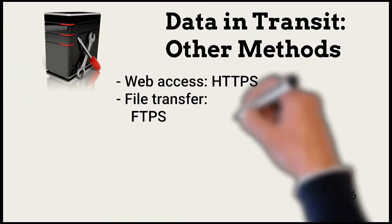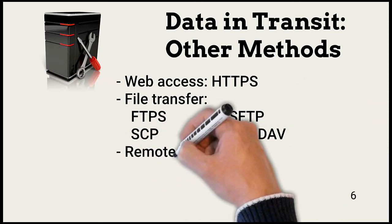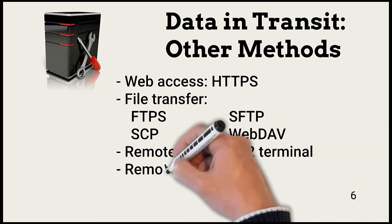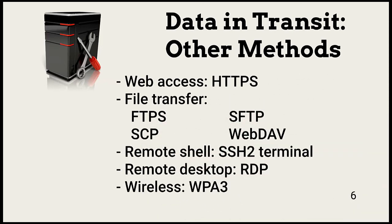In addition to asymmetric encryption, data in transit is protected by multiple protocols. The protocols used include HTTPS, used for secure browser connections; secure file transfer protocol, FTPS and SFTP, used to transfer files to and from servers or workstations; and secure copy protocol, or SCP, based on SSH and used to securely copy files.